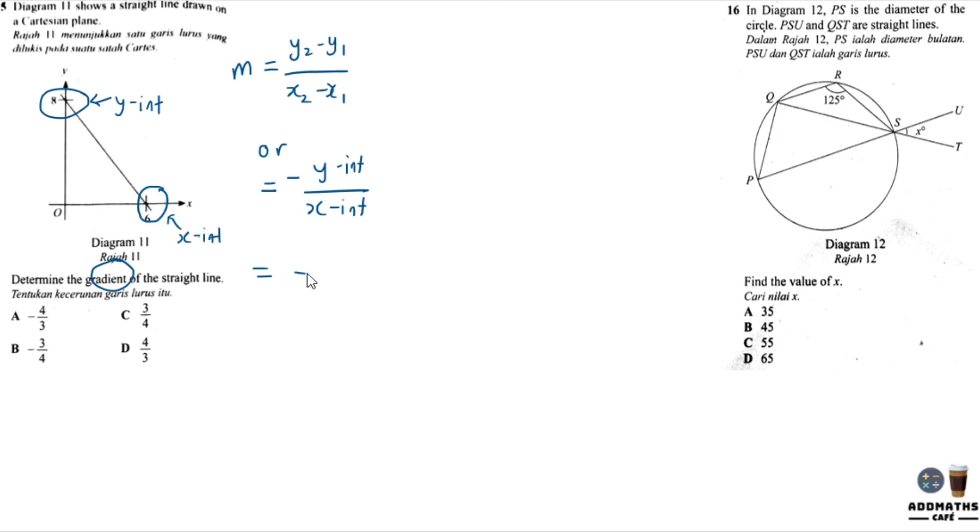So cut at y is 8, so apply 8. Cut at x is the x intercept over here. So your answer will be negative 8 over 6, which is negative 4 over 3 if you simplify it by dividing by 2. So the answer will be A.